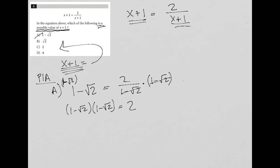Now, how about choice B? Because we're just plugging in answers. Choice B says, hey, x plus 1, a possible value of x plus 1 is square root of 2. So let's try it out. That means square root 2 would equal 2 divided by root 2.